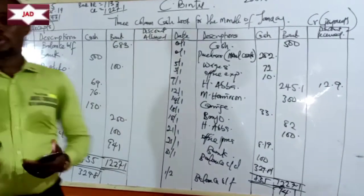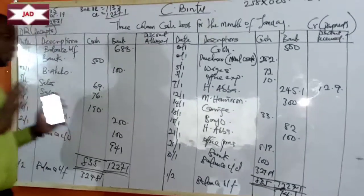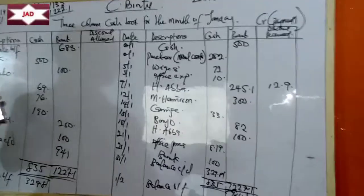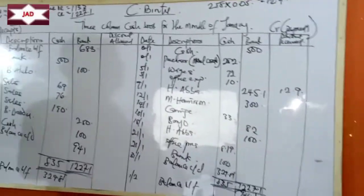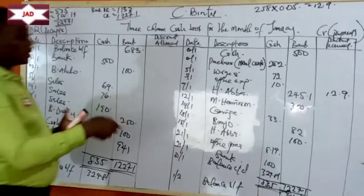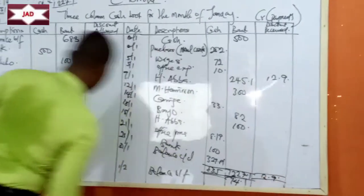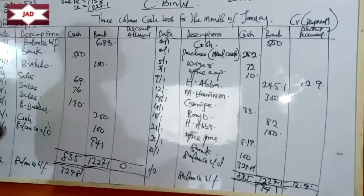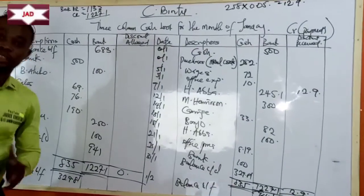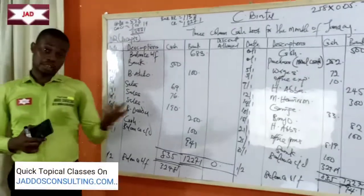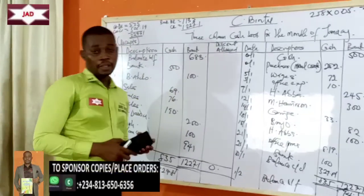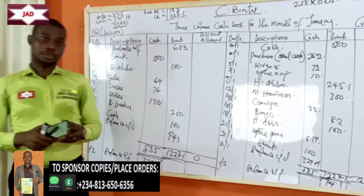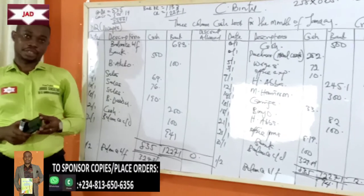This is the suggested solution for question 6, WAEC May/June 2000. This is a three-column cash book showing transactions paid and any discounts received, and transactions received with any discounts allowed. For the discount column, we just add up — no need to balance. The discount received is 12.9 Naira, and discount allowed is zero. For a comprehensive lecture on the three-column cash book, you can get my textbook. If you have questions, drop them in the comment section. Thank you.